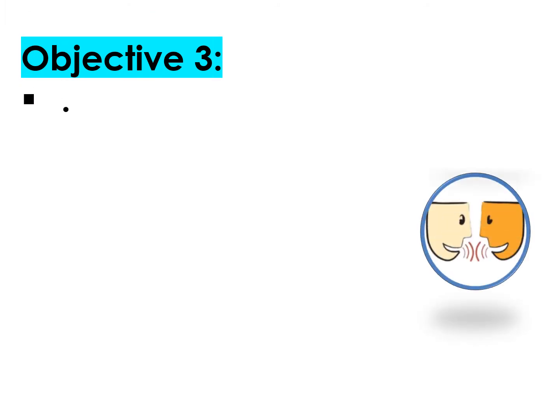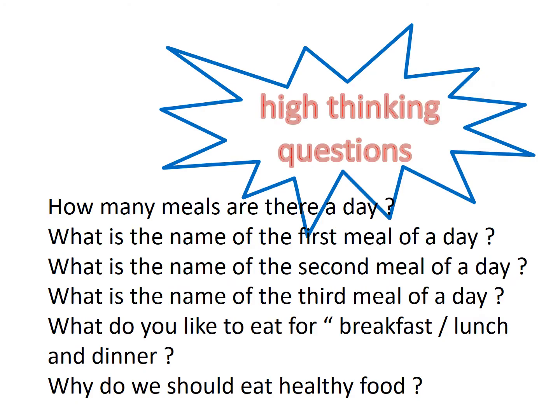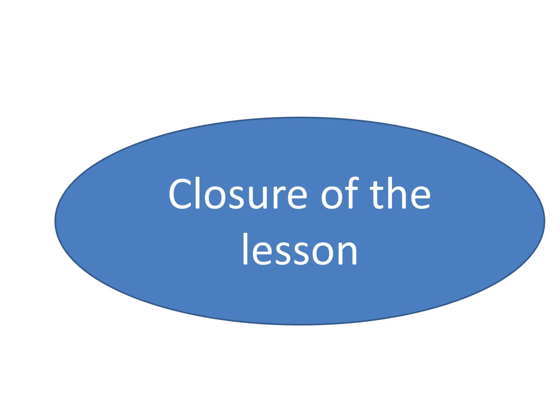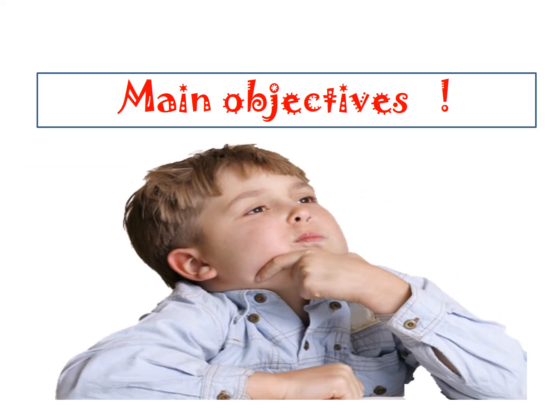Objective number three has been done. Now we come to the closure of the lesson. Which food do you like or don't like, and why? For example: 'I like fish — it is healthy. I don't like chips — they are unhealthy.' You can do the same with other pictures. This can be considered as homework.